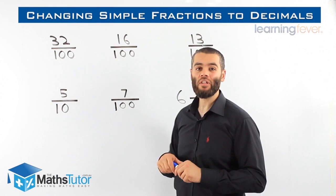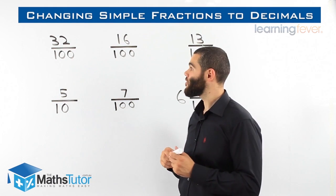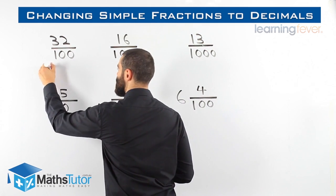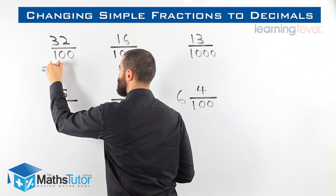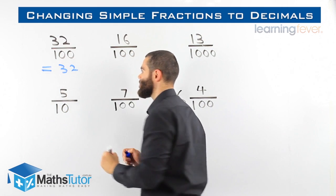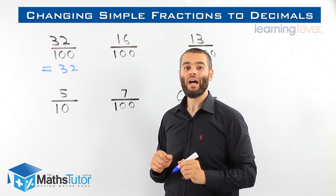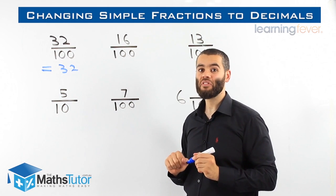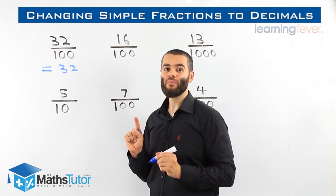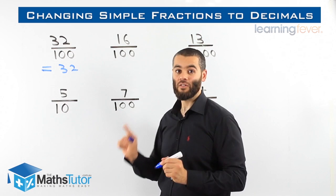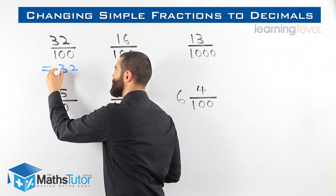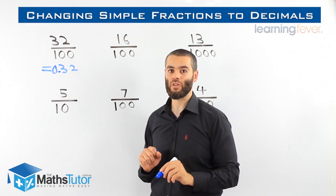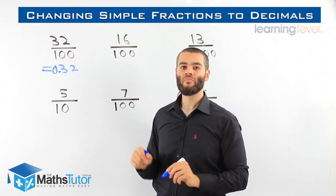In this example, we have 32 out of 100. We write the number and ask ourselves how many zeros are on the bottom. In this case we have two zeros, which means two numbers have to be behind the point. Two numbers behind the point, which means the point goes here — we have our two numbers and put our zero there: 0.32. Two zeros, two numbers behind the point.